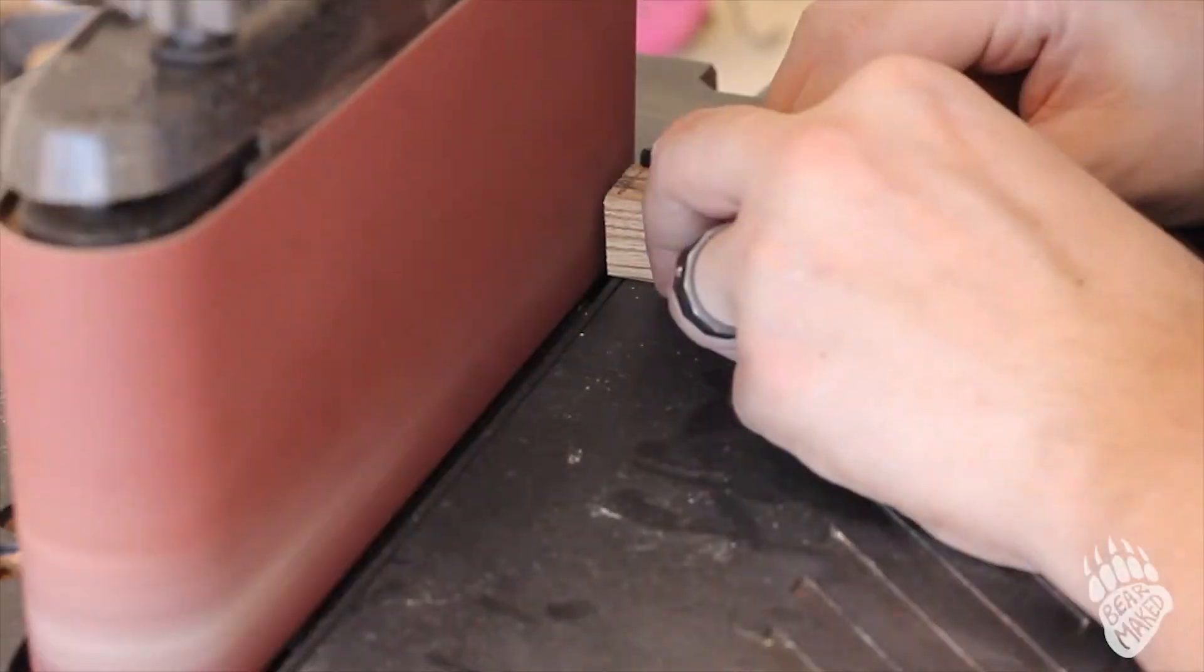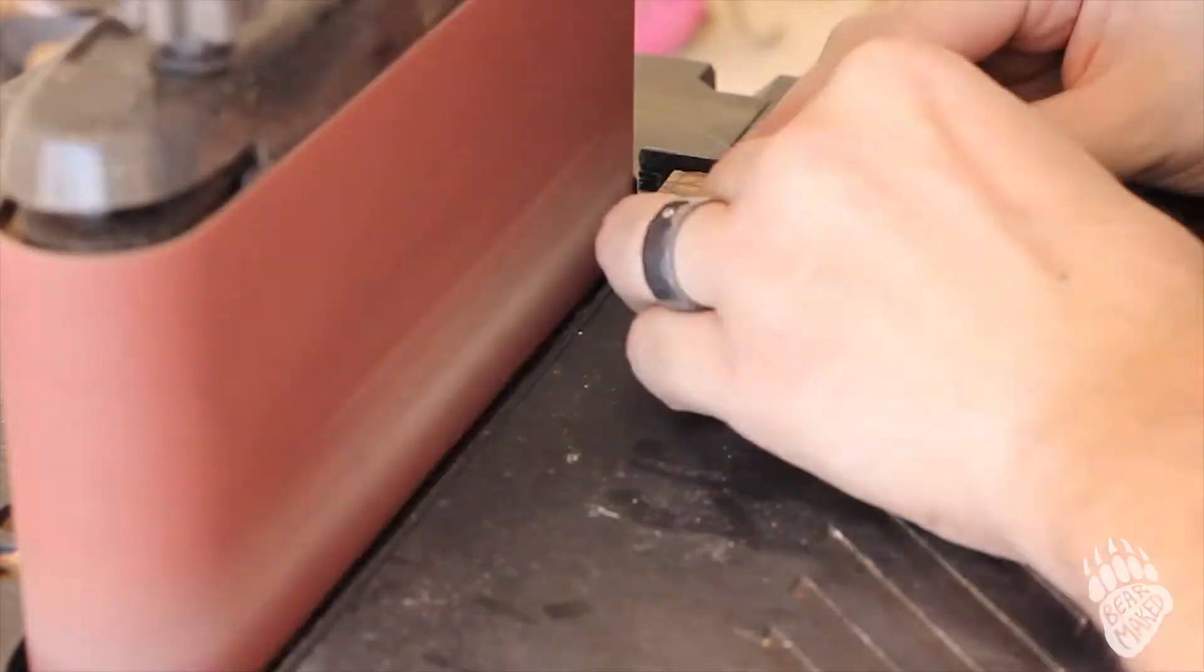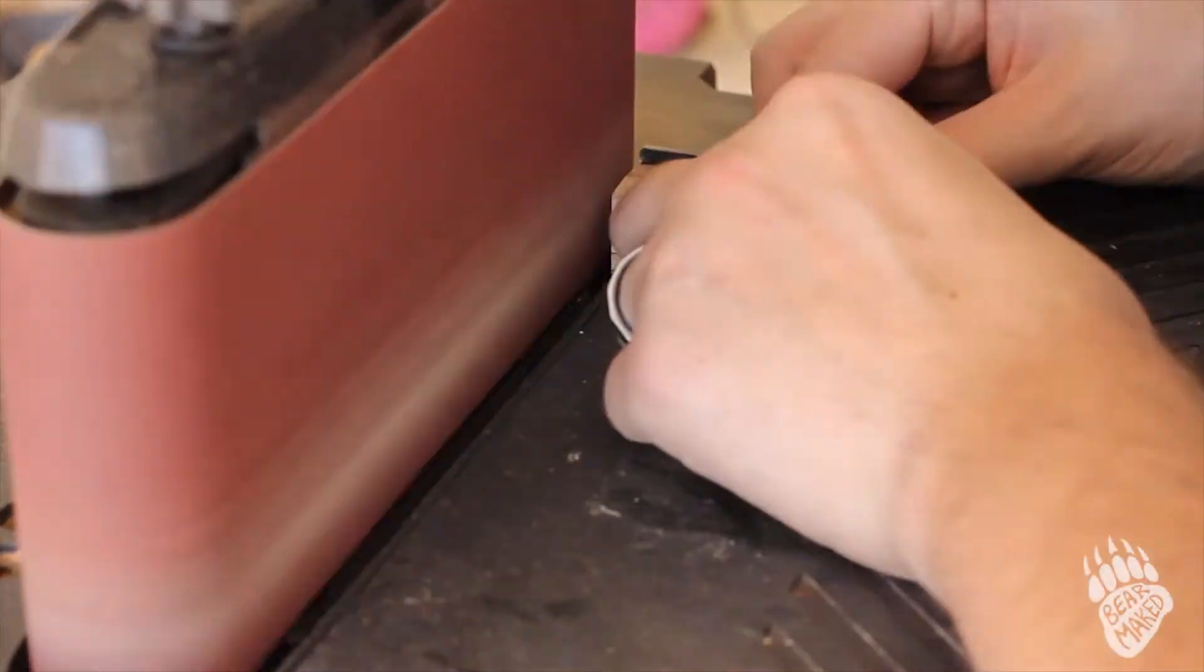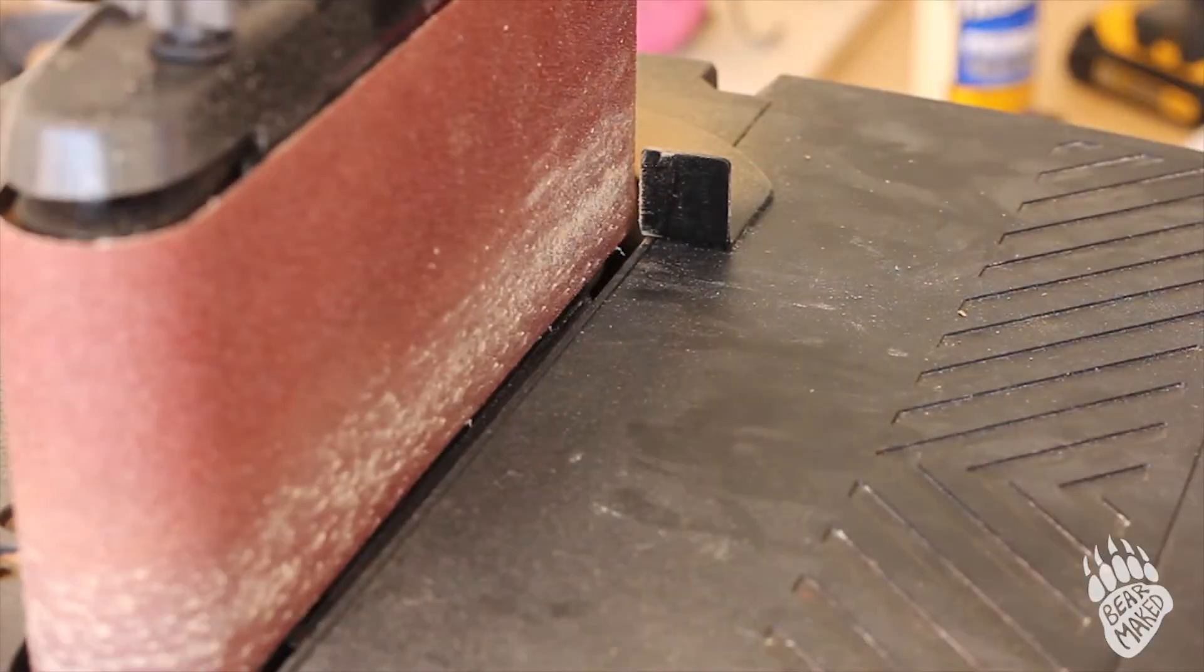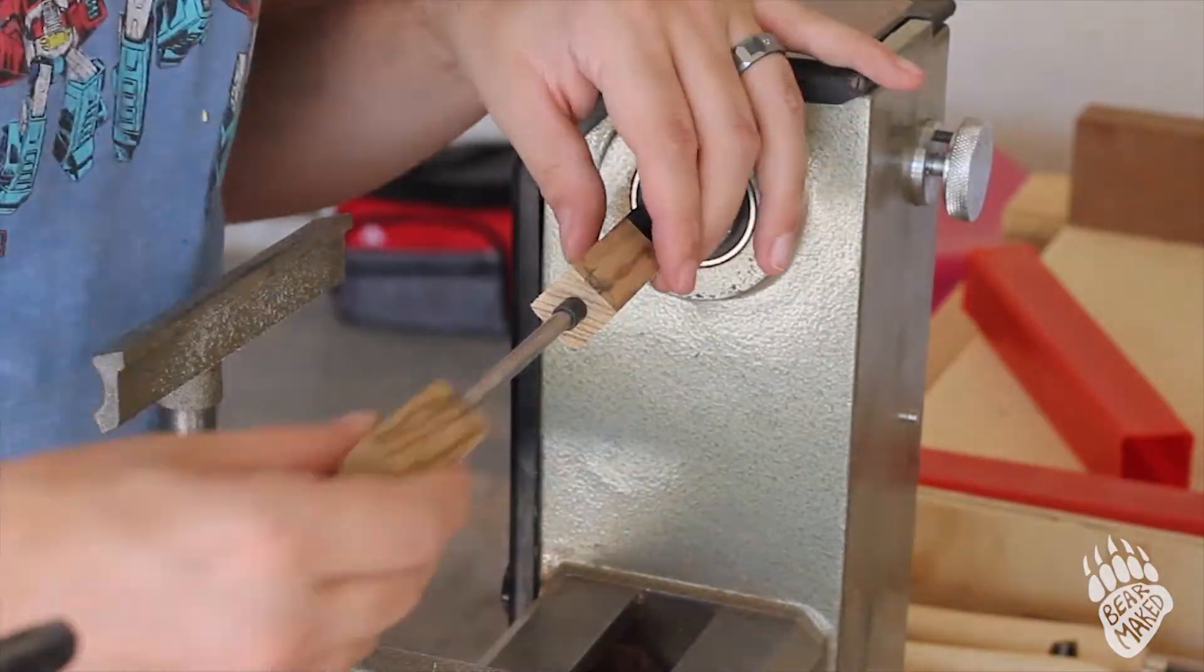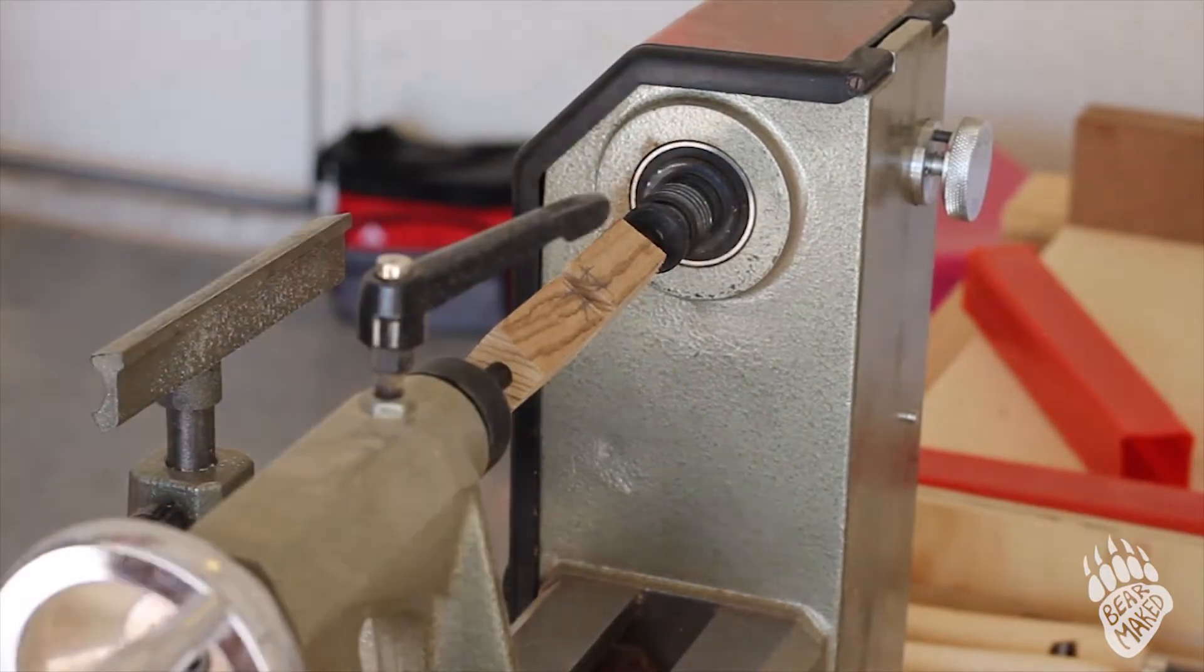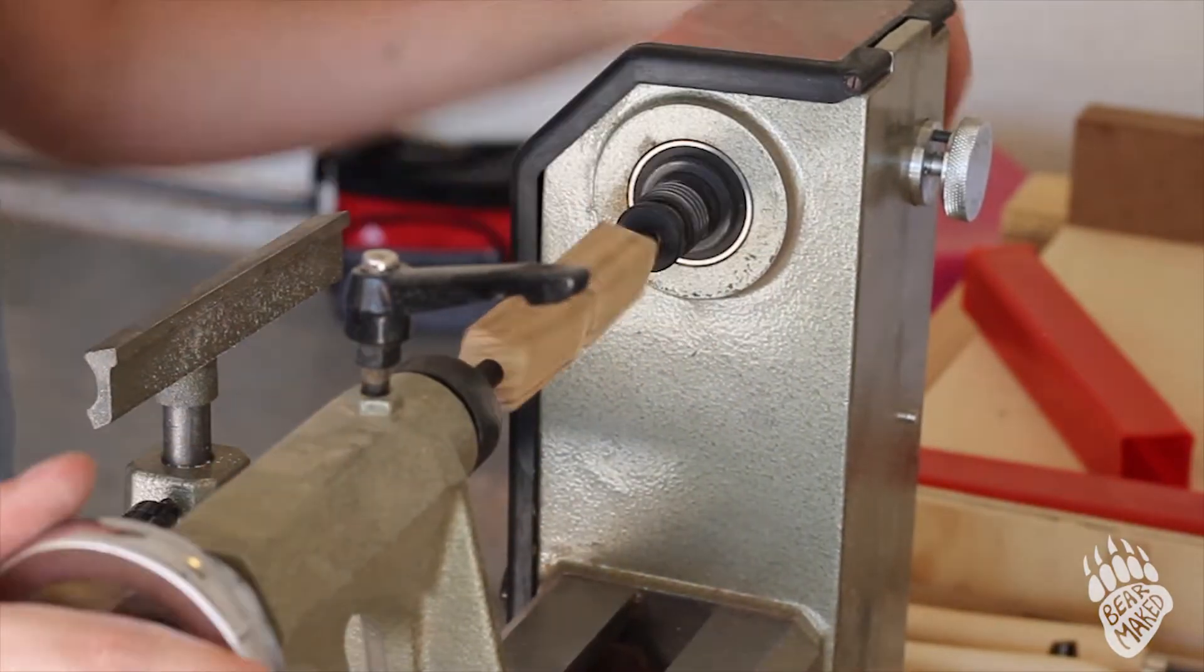And then head over to the sander to true it up, get it all the way down just until you can see the shiny part of the brass where it's just started to sand the brass. And then get it set up on the pin turning mandrel.